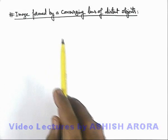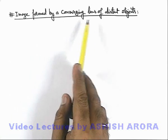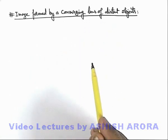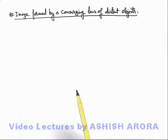Let us now study a phenomenon of image formed by a converging lens of distant objects. Say here if we consider this is a converging lens, for example we are taking a convex lens.